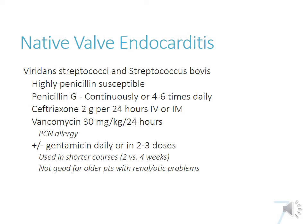Once cultures come back, we can target therapy. If it comes back as viridans streptococci or Streptococcus bovis, these typically are highly penicillin-susceptible with little resistance. So you can use penicillin G, sometimes given as a continuous infusion over 24 hours because penicillin is a time-dependent killer — keeping drug levels above the MIC for as long as possible. Alternatively, give it four to six times a day due to its relatively short half-life.